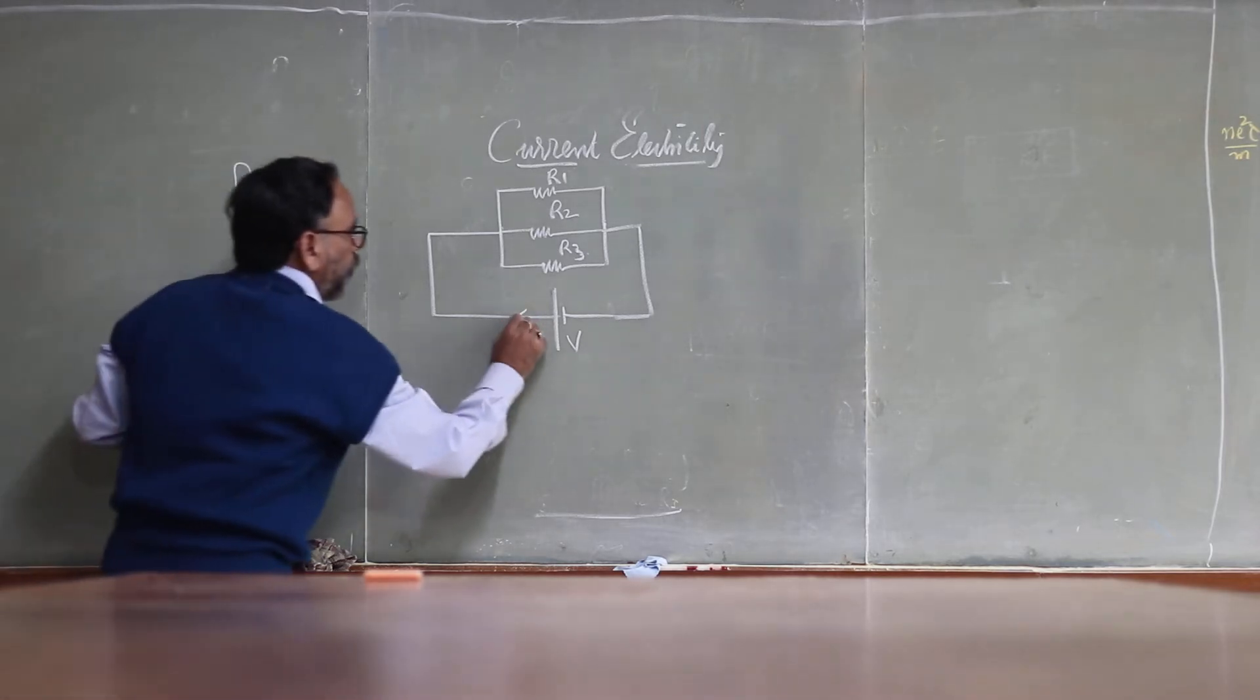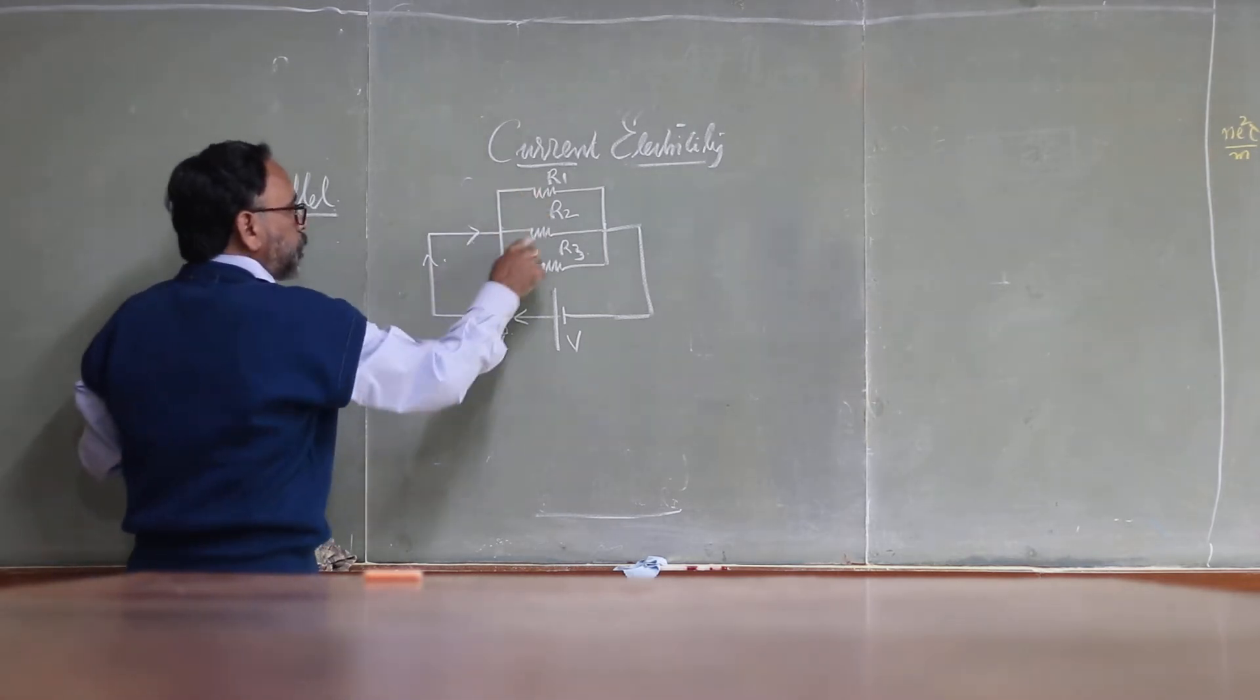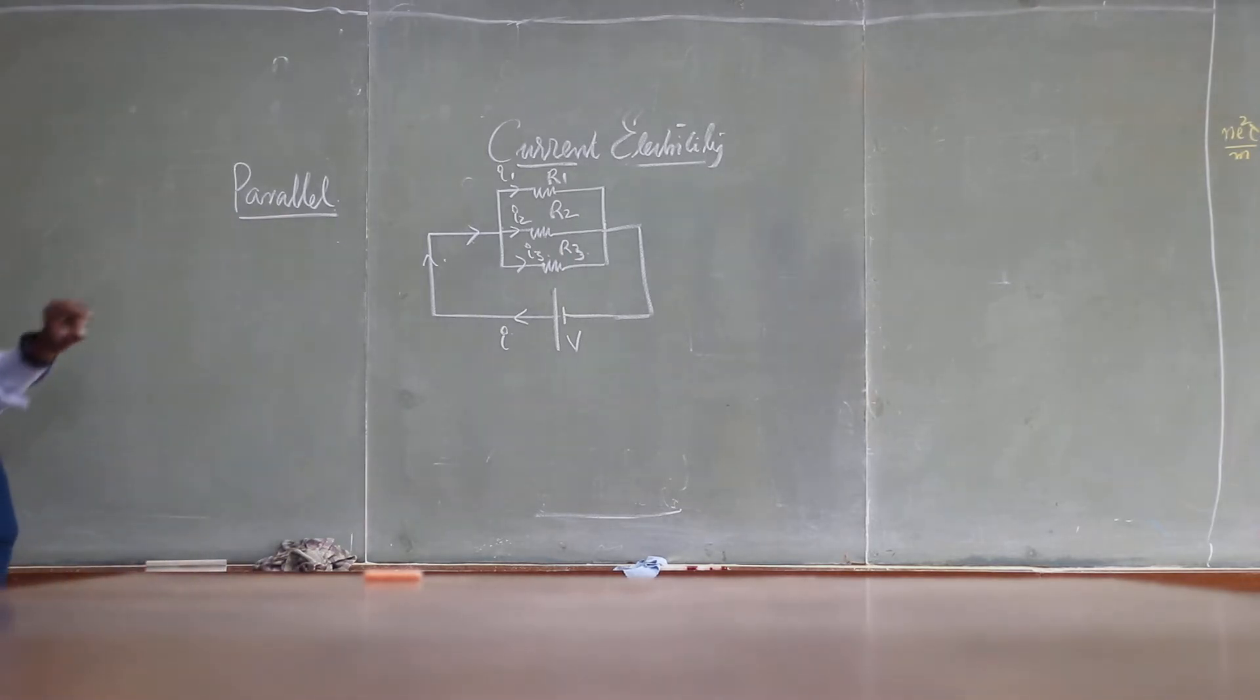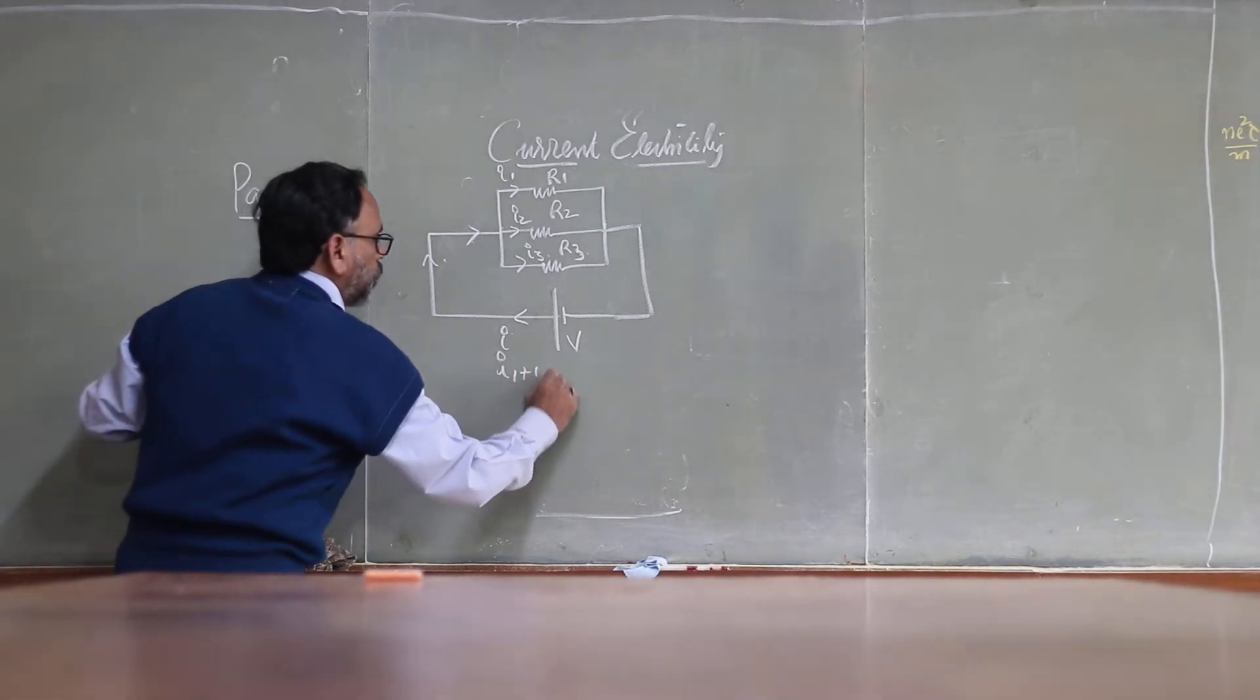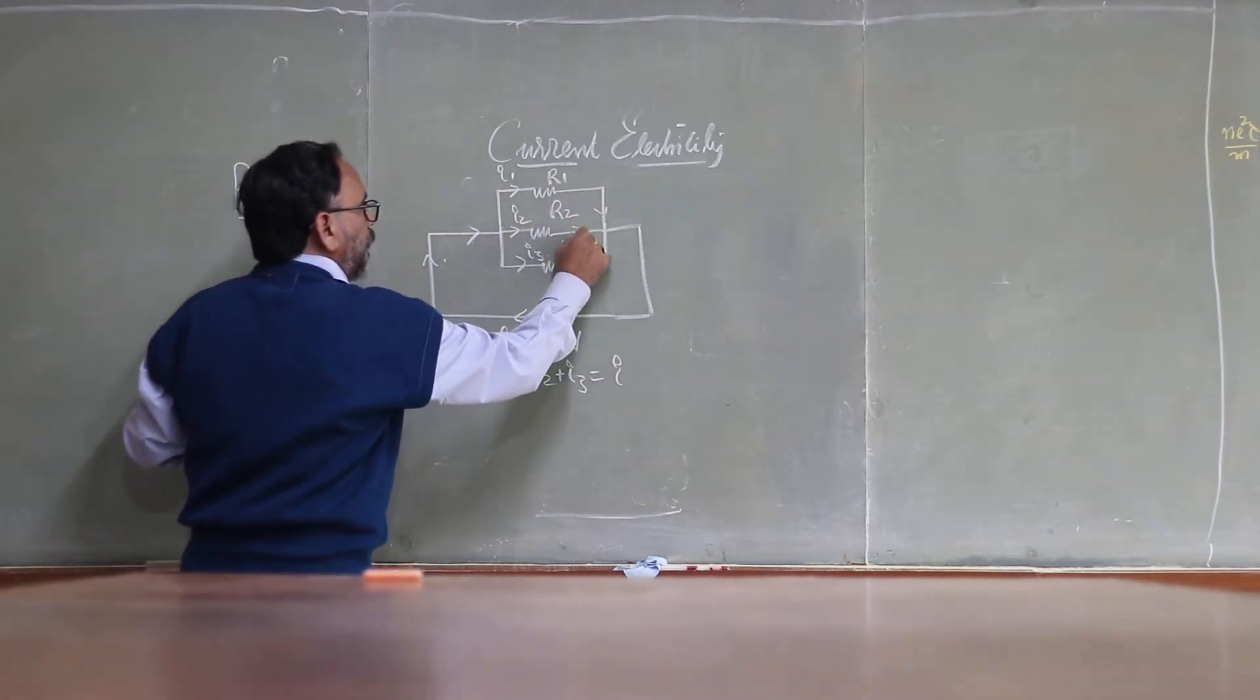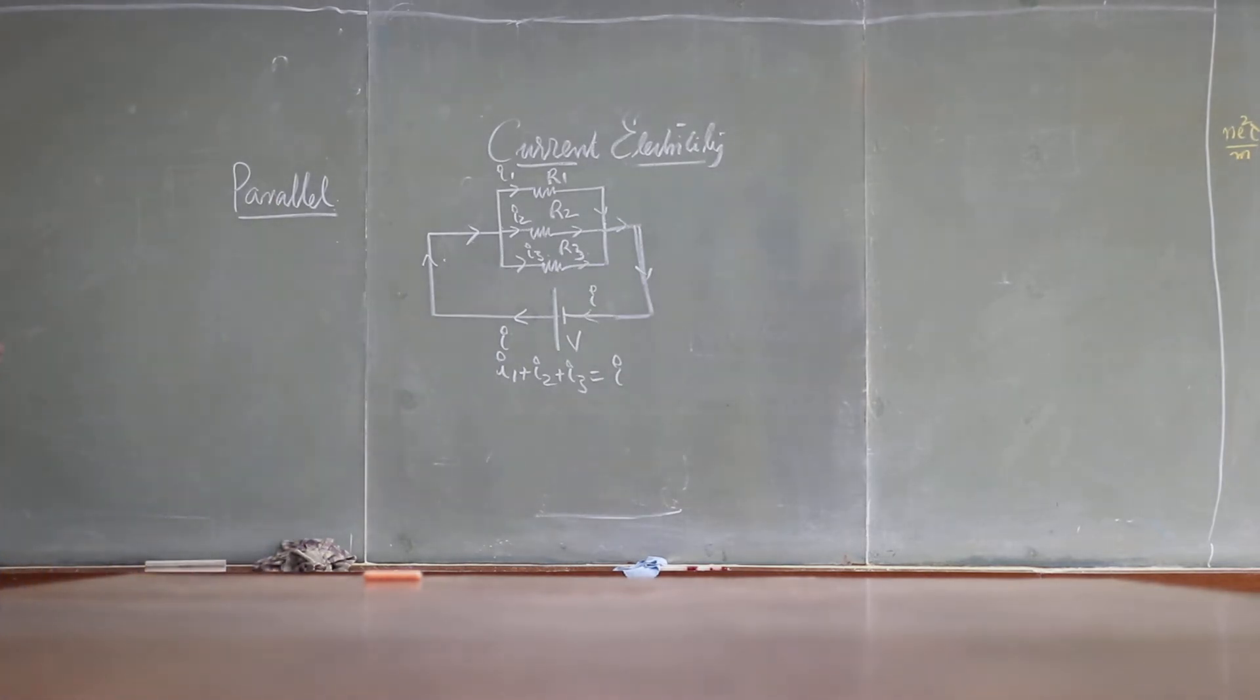Now if the battery draws the current I, this current comes here, but here there are three paths to go. Some current will pass through like this: I1, this is I2, and this is I3. Now the sum of the three currents, I1 plus I2 plus I3, must be equal to the current drawn by the battery. Finally they combine and then through the negative terminal, again current I returns.